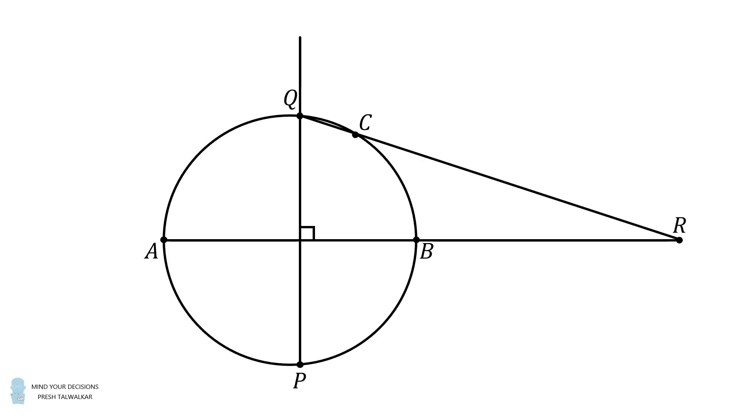Now we'll connect R and P. By symmetry, the point at which RP intersects the circle, we'll label this S, will exactly be the point C reflected about the diameter AB.